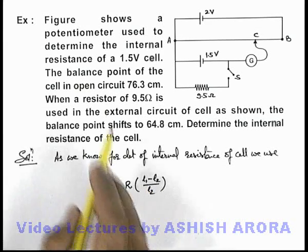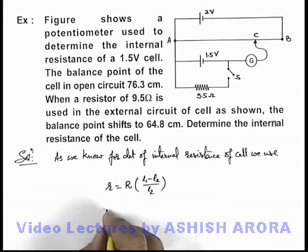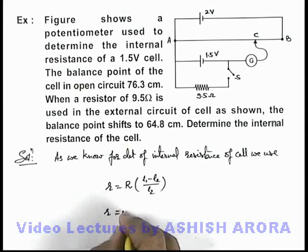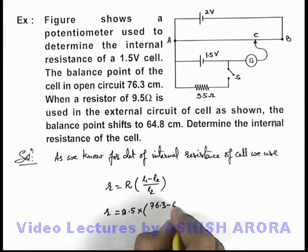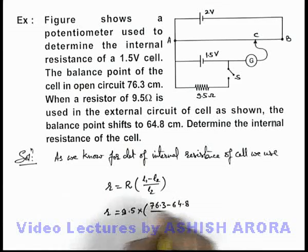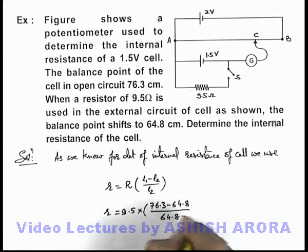Here the values of l1 and l2 are already given to us. If we substitute, the value of internal resistance will be 9.5, which is the external resistance, multiplied by 76.3 minus 60 minus 64.8, divided by 64.8.